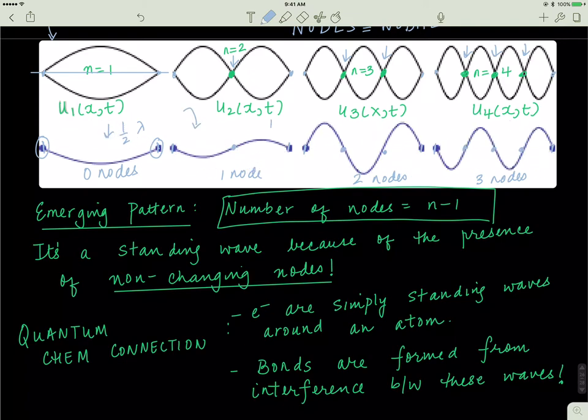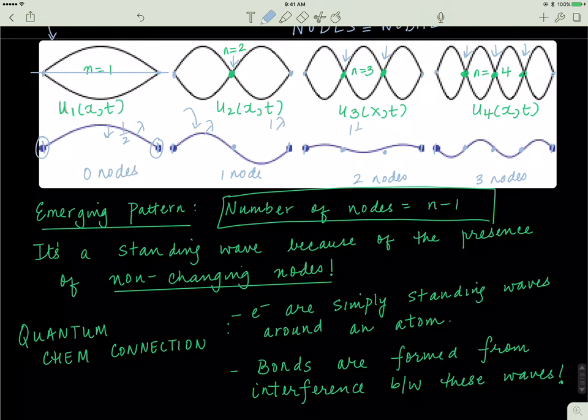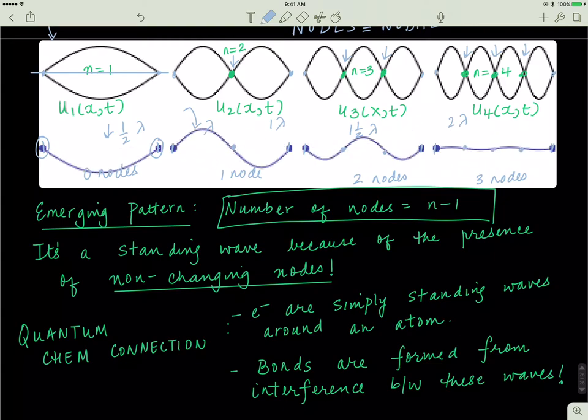So here I have one wavelength. Here I have one and a half wavelength. And here I have two wavelengths. Similarly, like this, atoms essentially have electrons that are standing waves around them.